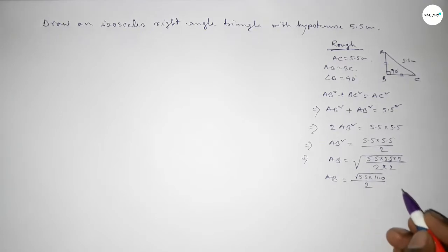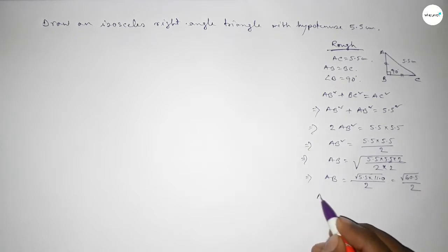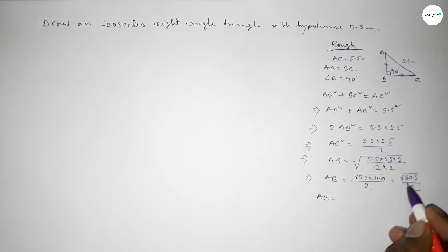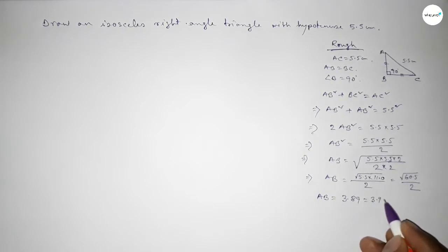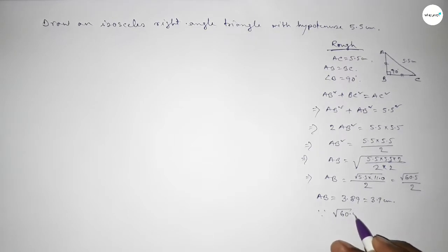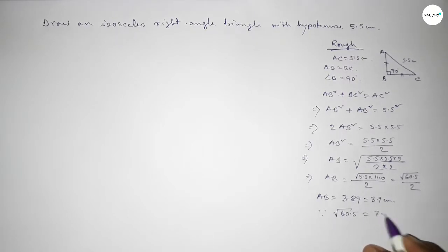Multiplying under the root, this is root of 60.5 over 2. AB equal to approximately 3.9 centimeter, since the value of root 60.5 equals 7.78 approximately.